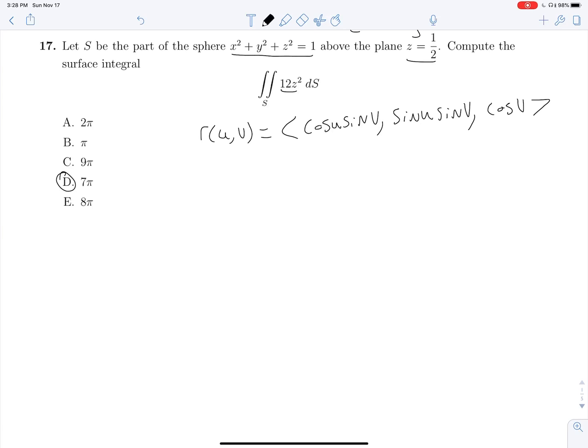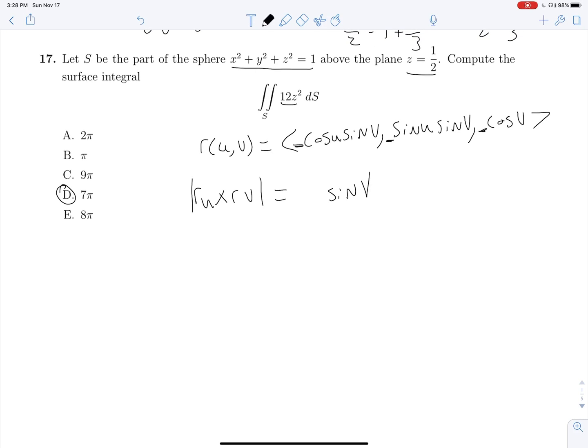And so we know that in order to parametrize a sphere, R of U and V is going to be cosine U sine V, sine U sine V, and cosine V. And we're taking a very big leap here, but it's an easy one to remember, and it will save you a lot of time, that RU cross RV, the magnitude of RU cross RV, which we know to be something that we need to find here. That's going to be A squared sine V, where A is just whatever coefficients we had out here. In this case, it's one, so we can remove our A squared.